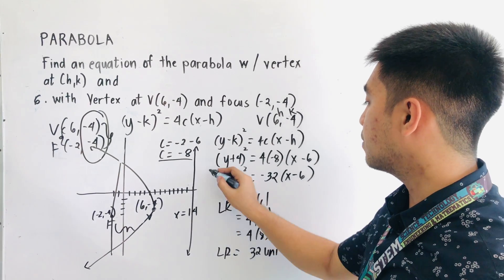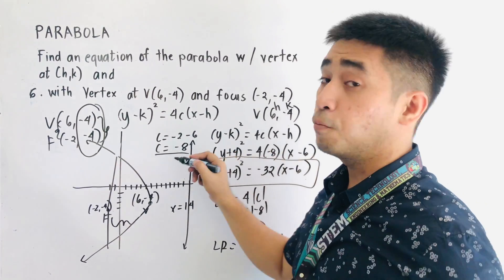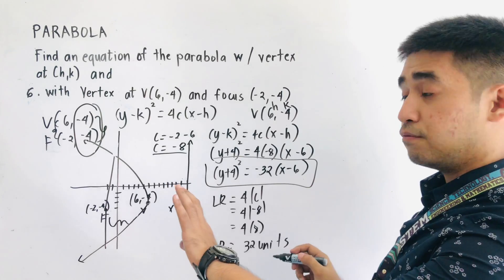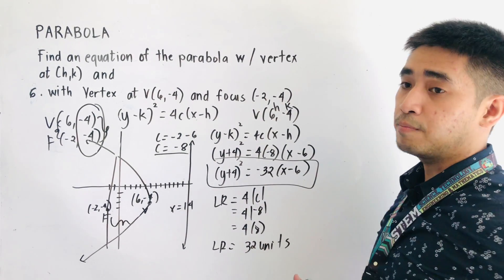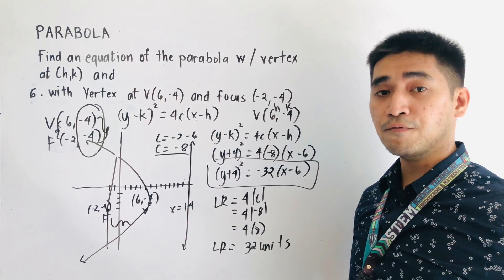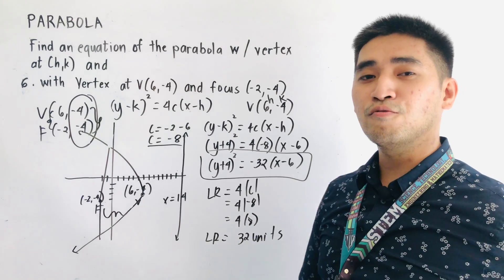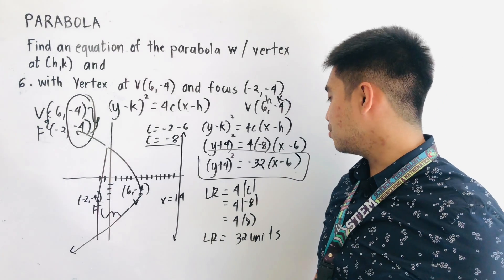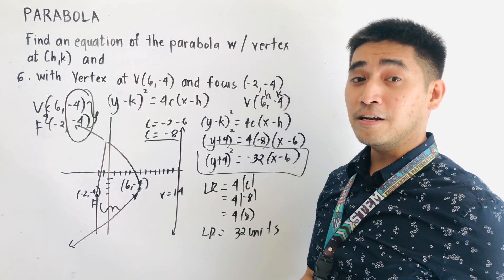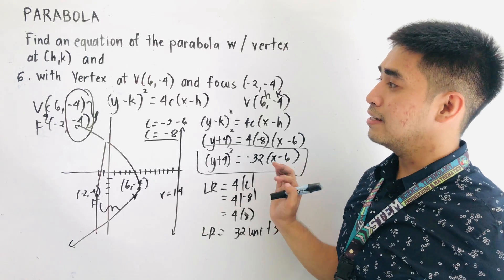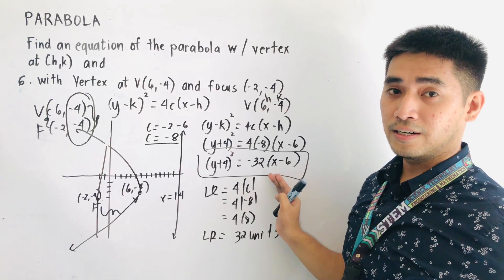The equation of the parabola, opening to the left, is negative. We have: (y + 4)² = -32(x - 6). Therefore, this is our answer.